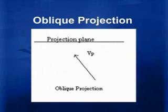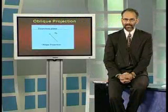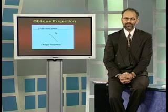We left our discussion at the beginning of the oblique projections. We have talked about the orthographic projections — both are parallel projections. In the case of orthographic projections, the projectors drawn from the object to the view plane are perpendicular. But in oblique projection, they are drawn at some angle other than the right angle.